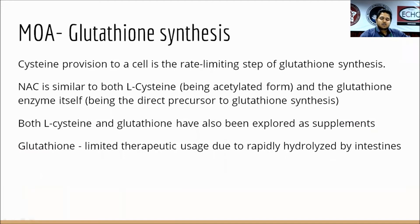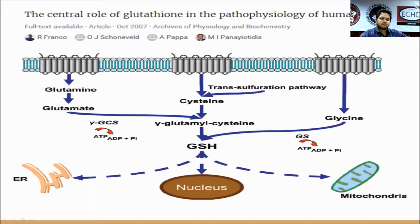Coming to the mechanism of action: N-acetylcysteine is nothing but a prodrug of cysteine, which is useful in the synthesis of glutathione. The provision of cysteine is the rate-limiting step of glutathione synthesis. You can either give a cysteine prodrug or glutathione directly, but the problem with giving glutathione is that it is easily hydrolyzed by the intestine and cannot be absorbed. So you have to give cysteine to increase the production of glutathione.